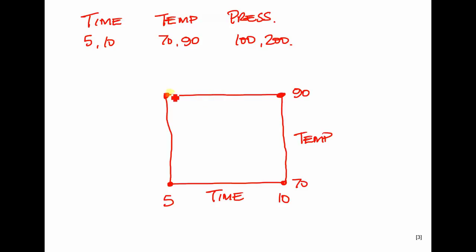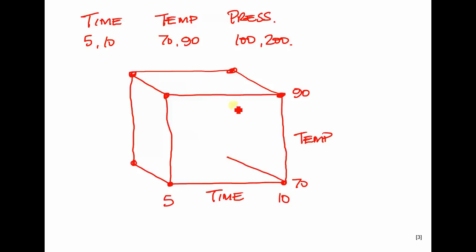Adding the third variable creates a cube, known as a design space. We test at the corners of that design space — eight places — with pressure tested at 100 (low) and 200 (high). That is a designed experiment: a mathematical pattern that gets the most information from your tests.